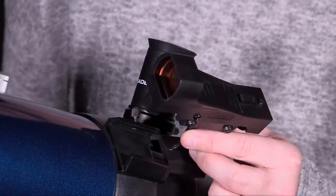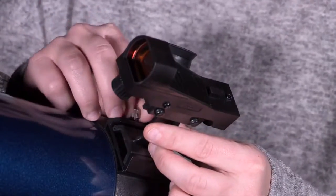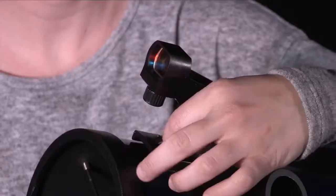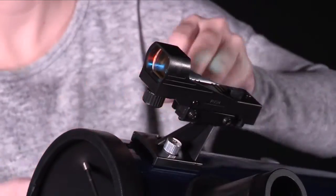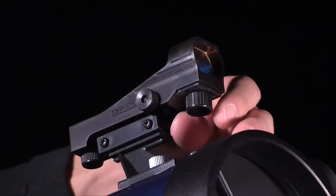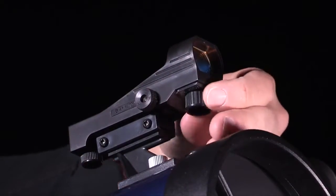Depending on the model that you have, the red dot finder will attach to the telescope by either sliding into the finder holder spot or by using two thumb screws to attach the base to the telescope. Turn the knob at the front of the finder scope to the right to turn the red dot viewfinder on.